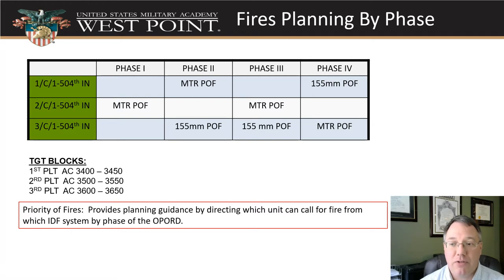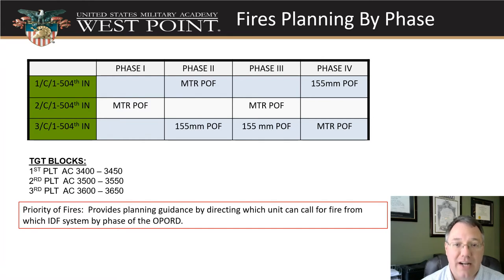Planning also helps you know what your backup weapon system is. If you're first platoon, your primary is to request mortars. If you can't get the mortars or something happens to them, your secondary is to request the 155s.